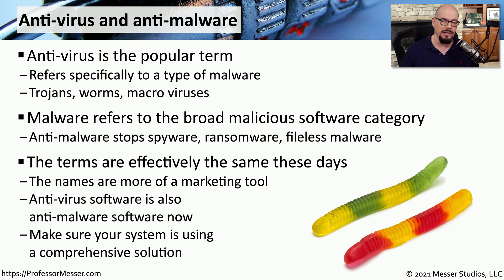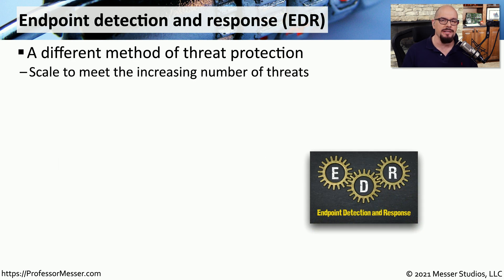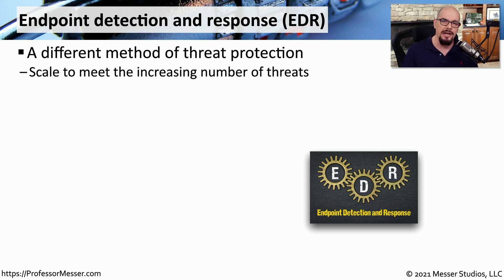These capabilities have been generally combined into the same software suite, so if you're running one of these, you're probably running the other as well. One of the challenges with antivirus and anti-malware software is they tend to focus on identifying malicious code through the use of signatures — a set pattern that may be within the file or within the memory being used by the malicious software. However, attackers have found many ways around signature-based detection.